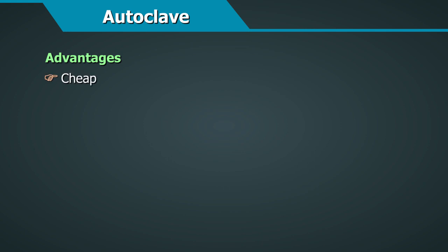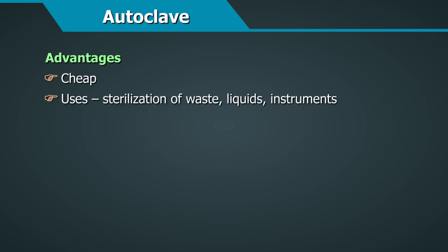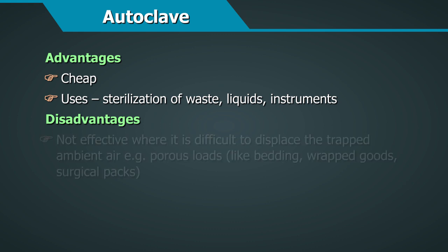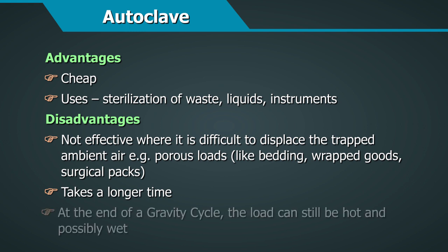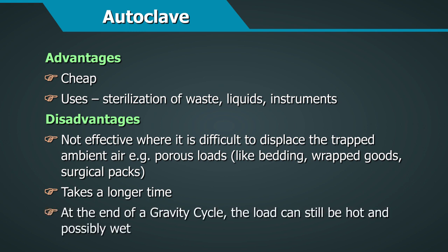The gravity displacement autoclave is a cheap method. However, it is not effective where it is difficult to displace trapped ambient air, for example with porous loads like bedding, wrapped goods, and surgical packs. It also takes a longer time, and at the end of a gravity cycle the load can still be hot and possibly wet.